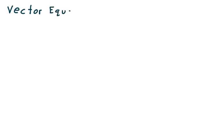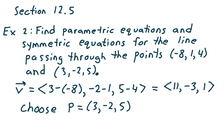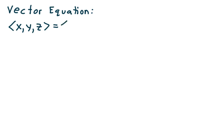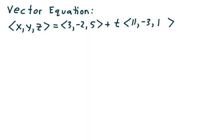Let's write down the vector equation for the line. So I'm going to say XYZ equals the position vector for the point 3, negative 2, 5 — so the vector 3, negative 2, 5 — plus T times the vector that runs parallel to the given line. In this case, the vector is 11, negative 3, 1. And remember, T is a real number. So this is the vector representation of a line.